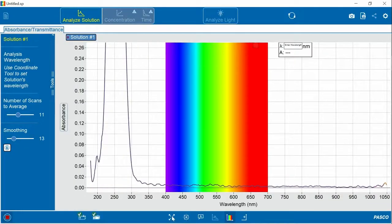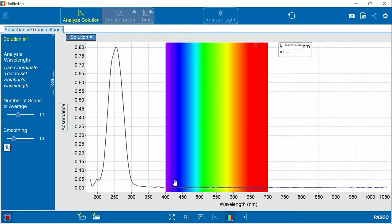I'm going to scale the data. And you'll notice that this solution does not absorb light in the visible region, but it does in the UV region. Now I can use the coordinate tool to identify the peak absorbance. And you'll want to keep your maximum absorbance below 1.